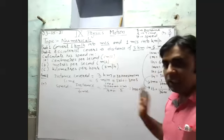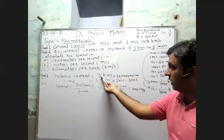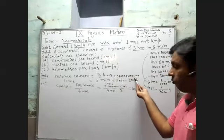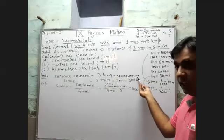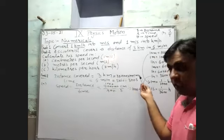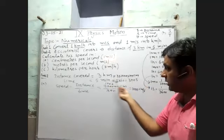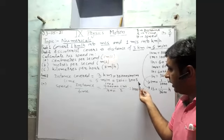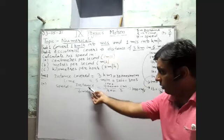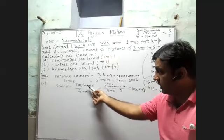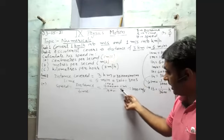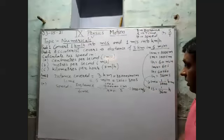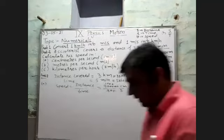The conversion is simple: three kilometers multiplied by 1000 for meter, then multiplied by 100 for centimeter. Five minutes multiplied by 60 gives 300 seconds. Speed equals distance divided by time — distance in centimeter divided by time in seconds gives 1000 centimeter per second.